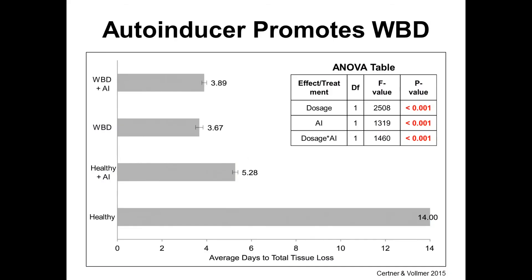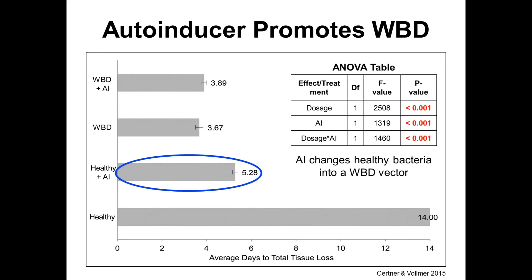Here are the results. On the x-axis we have average days to total tissue loss — basically days until the coral died — and on the y-axis we have the four treatments. The two treatments that got disease bacteria experienced full mortality within fewer than four days. Corals that got healthy bacteria alone lived till the end of the experiment — the full two weeks. Corals supplemented with healthy bacteria plus autoinducer experienced full mortality in 5.28 days — significantly different from the healthy-alone group. This says that autoinducer has the ability to change a healthy bacteria population into a white band disease vector.